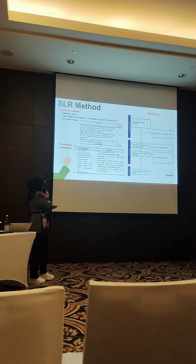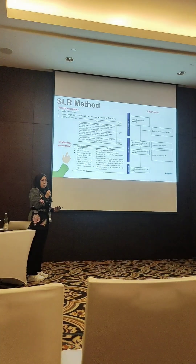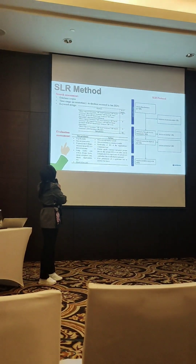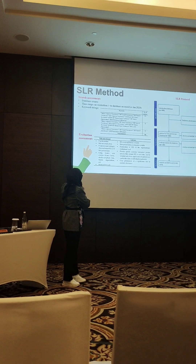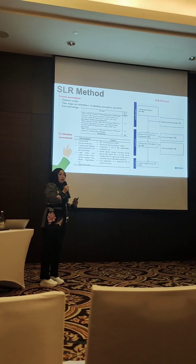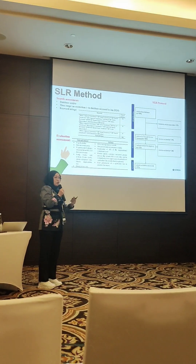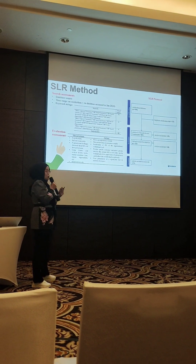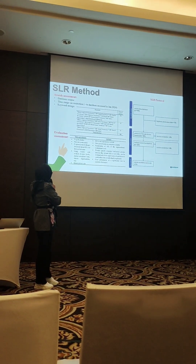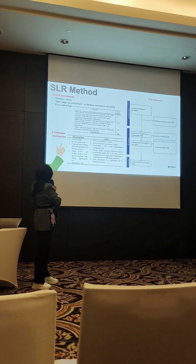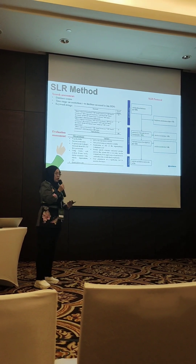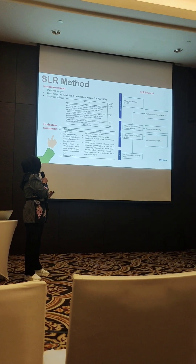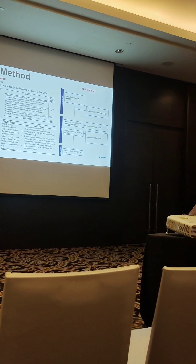For the research method, we conducted a systematic literature review following the PRISMA mechanism, using a relevant application. We also performed several keyword searches and search strategies to get relevant articles. We limited our database to Scopus only, since it is the most credible database among all. We also did several evaluation assessments using eligibility criteria, as you can see on the slide, conducted in both title and abstract and also in full text review. From 995 articles collected, we then filtered them into 173 final articles for content analysis.